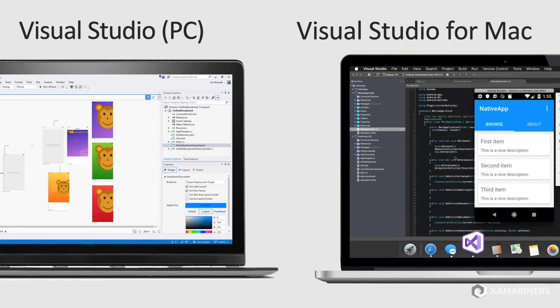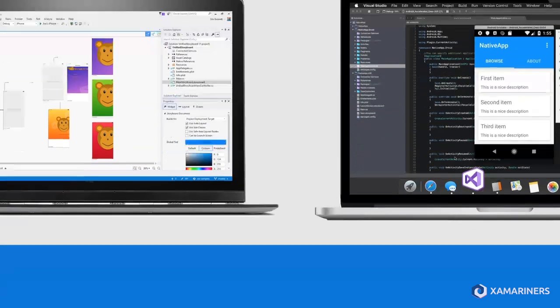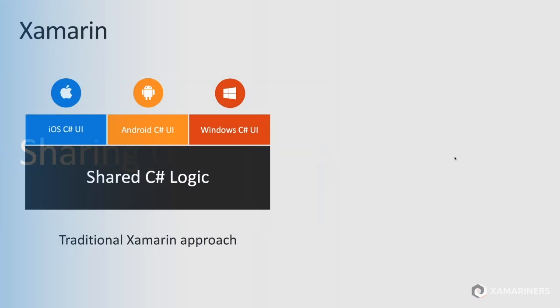Xamarin can be developed on two ecosystems: Visual Studio on Windows, or Visual Studio for Mac running on macOS. Both are very similar, use the same Roslyn compiler under the hood, give you access to the same NuGet packages, and you can manage your own references. Both are well-supported environments.